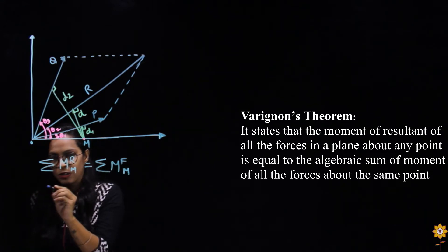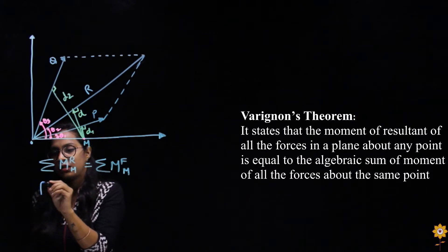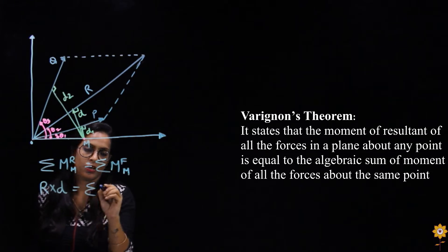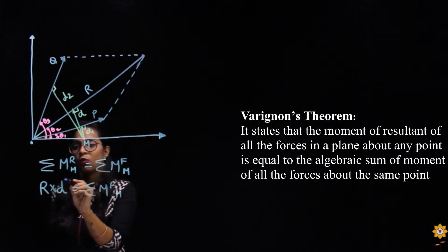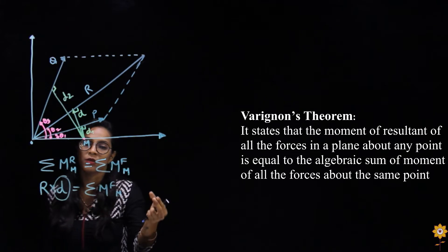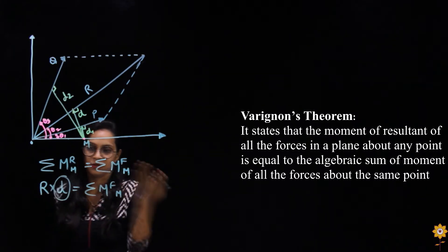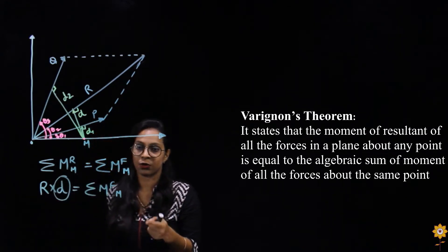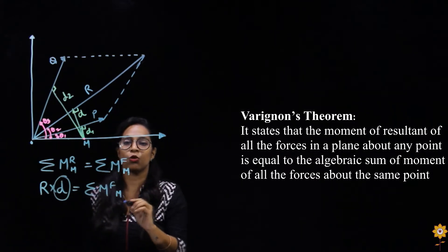If we simplify this, it would be: resultant force R into D equals the moment of all the forces from that point. From here, we get the distance D — where the resultant will be located in the system. But before we move into solving parallel force system and general force system problems, we need to know what moment is, because to apply Varignon's theorem we need to find the moment first.